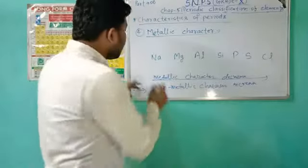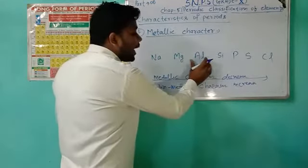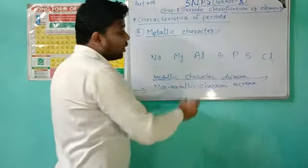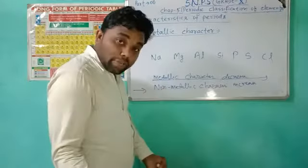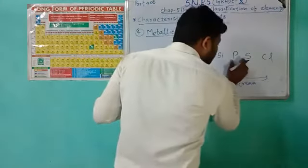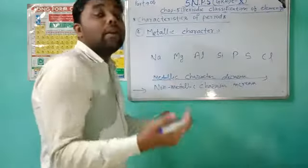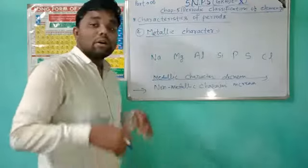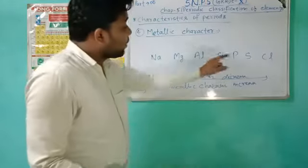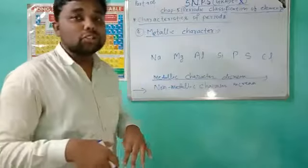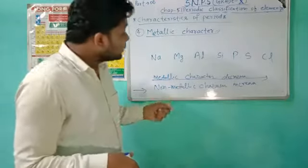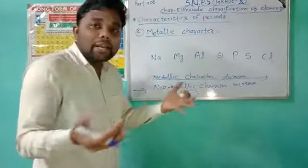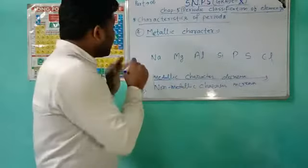This is about metals and non-metals. Sodium, potassium, and aluminium are metals. Silicon is a metalloid. Phosphorus, sulfur, and chlorine are non-metals. Metals have the tendency to lose electrons, non-metals have the tendency to accept electrons, and metalloids can form covalent bonds by sharing electrons.